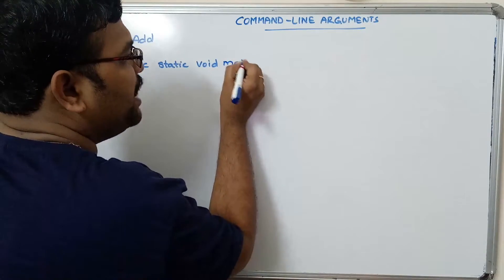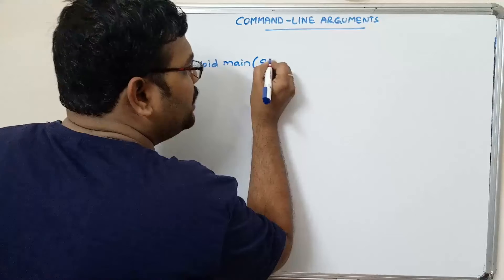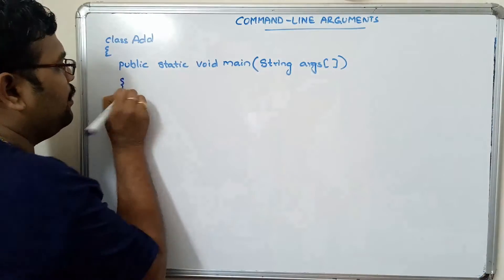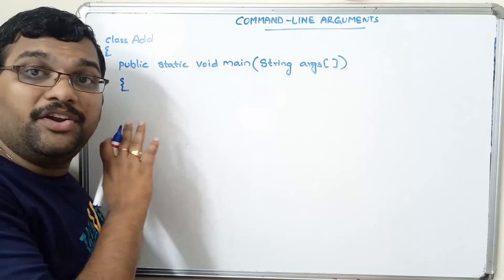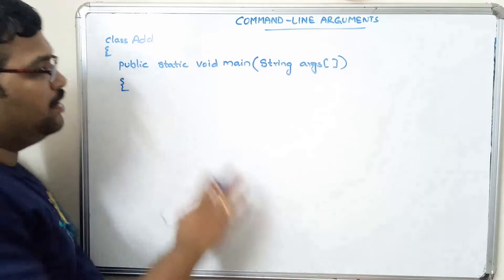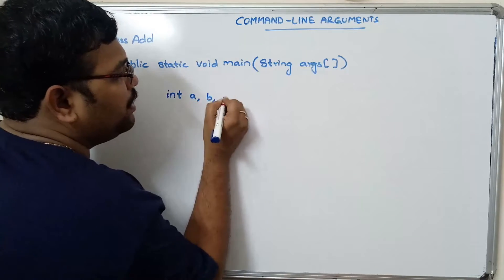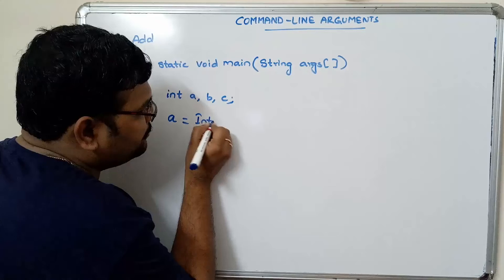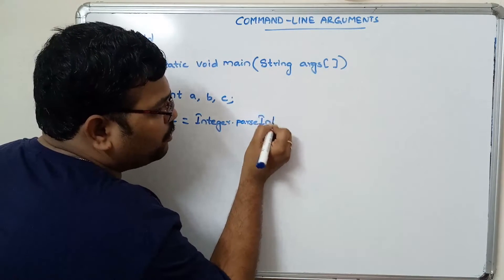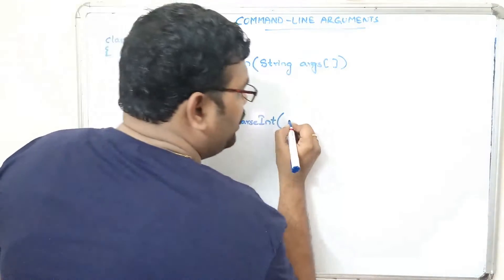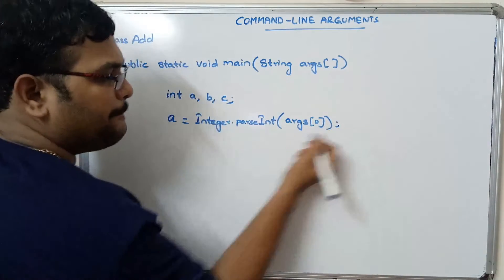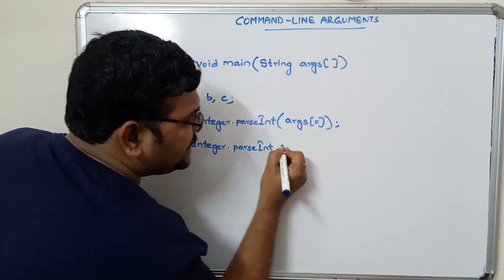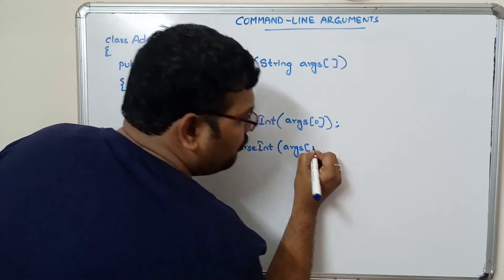We write void main and pass the arguments — String[] args, where we can use any identifier name. We need not write any input statements. Just declare int a, b, c. Then assign: a = Integer.parseInt(args[0]), which reads the first command line input at index zero, and b = Integer.parseInt(args[1]), which reads the second argument at index one.